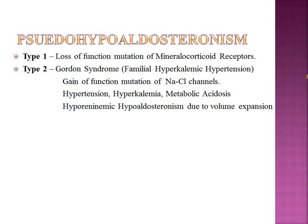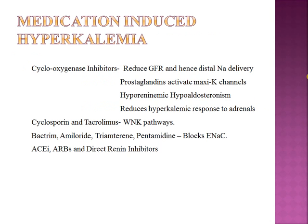Gordon syndrome is also known as familial hyperkalemic hypertension. With a gain-of-function mutation of the sodium chloride cotransporter, excess sodium is absorbed in the distal nephron, increasing volume and causing hypertension. Hypertension suppresses aldosterone synthesis, reducing potassium secretion via ROMK channels, leading to hyperkalemia. Additionally, since sodium is already absorbed through NCC, less sodium is available for ENaC, so there is no exchange of potassium or protons, leading to metabolic acidosis. This results in hyporenin hypoaldosteronism due to volume expansion.